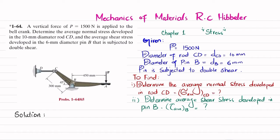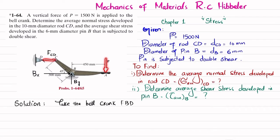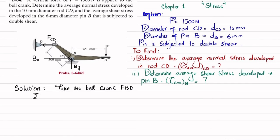Let's start with the solution. We take the bell crank free body diagram (FBD). If we remove the pin support at point B, we have a vertical reaction force represented as BY and a horizontal reaction force represented as BX. The rod CD exerts a force FCD — you can see this force is directed such that the rod exerts FCD in tension. We'll find FCD, BX, and BY using equations of equilibrium.